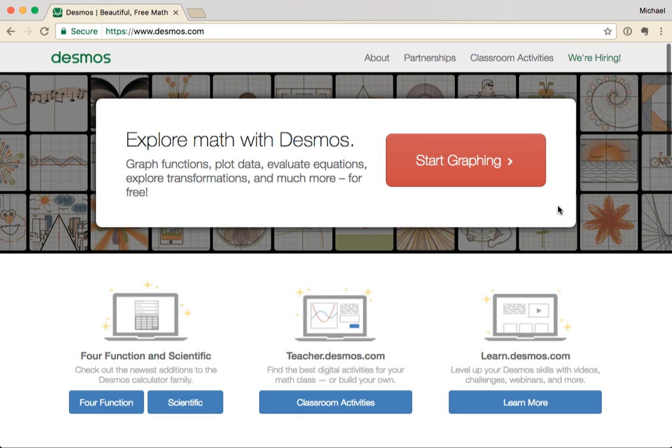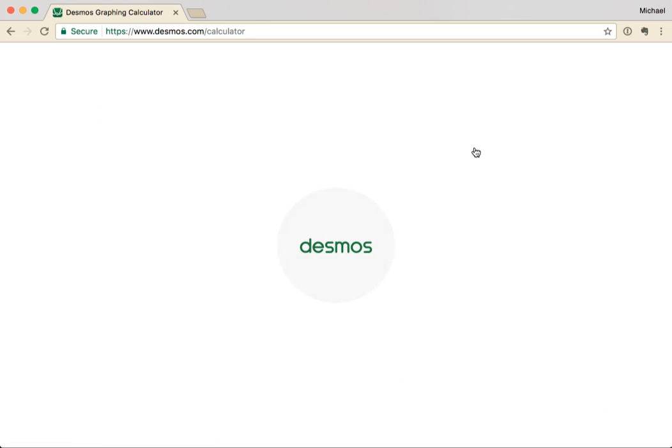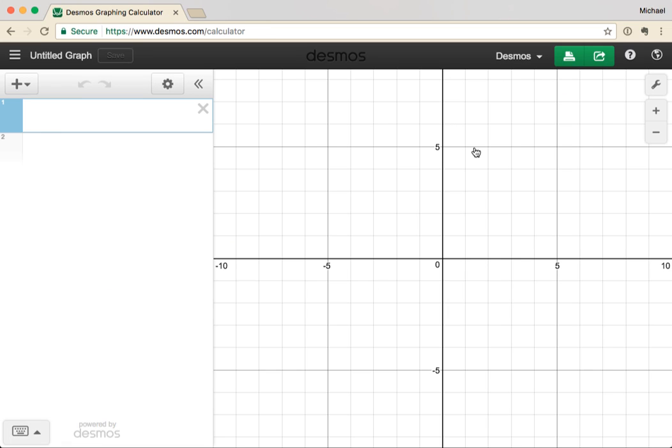At Desmos, our mission is to help every student learn math and love learning math. With that in mind, we've introduced improvements to our free online graphing calculator to ensure that students who are blind or visually impaired have the same opportunities as their peers to discover the joy of learning math. In this video, we'll take a brief look at these new accessibility features.